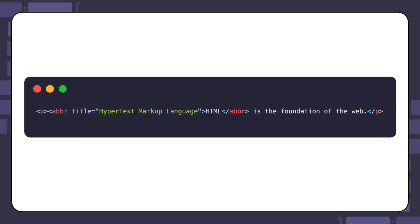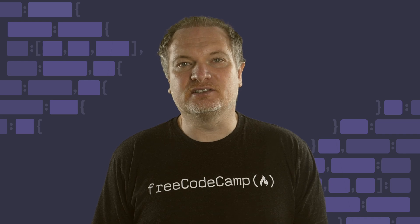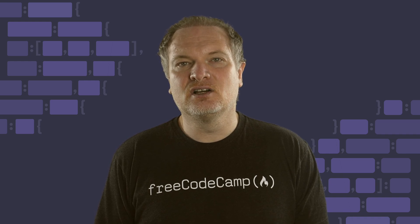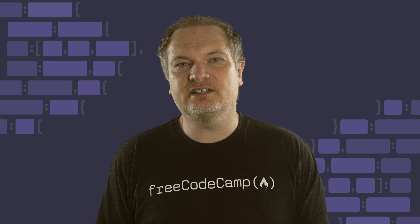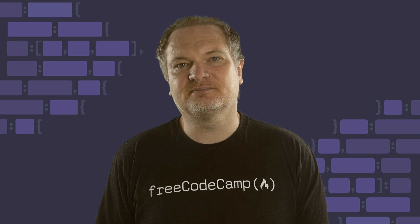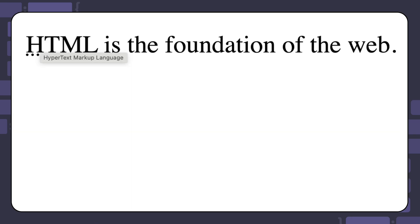Usually, the style of the abbreviation element will change when you add this attribute. The specific style will depend on the browser. Some browsers may display a dotted underline, while others may convert the contents to small caps or even assign certain default styles. Here you can see the HTML example with a dotted underline. When the user hovers over the acronym with the mouse, the full form is displayed as a tooltip.